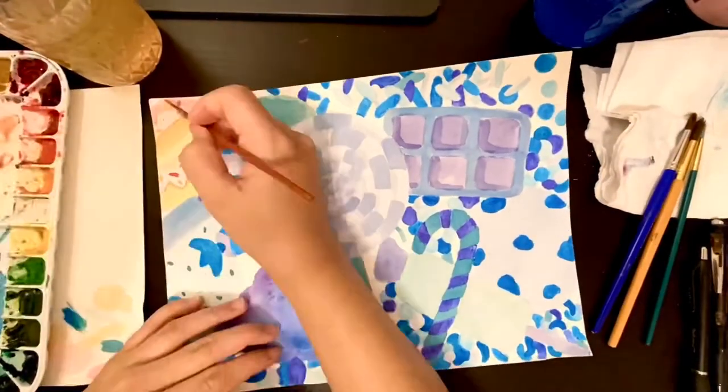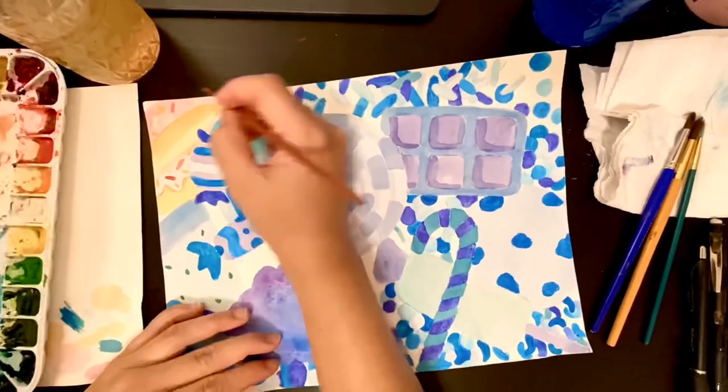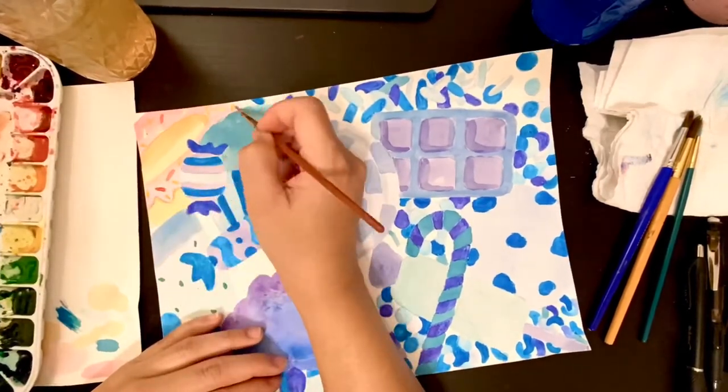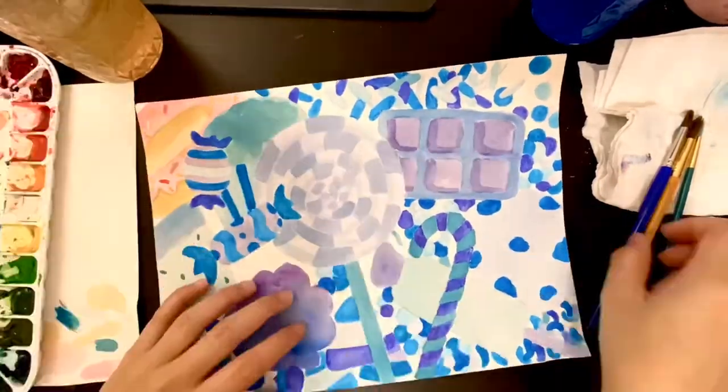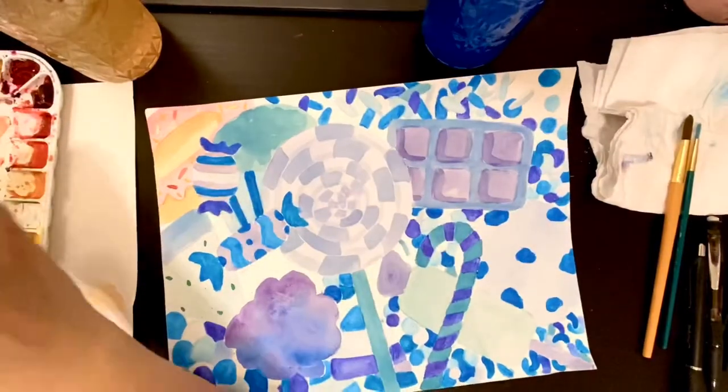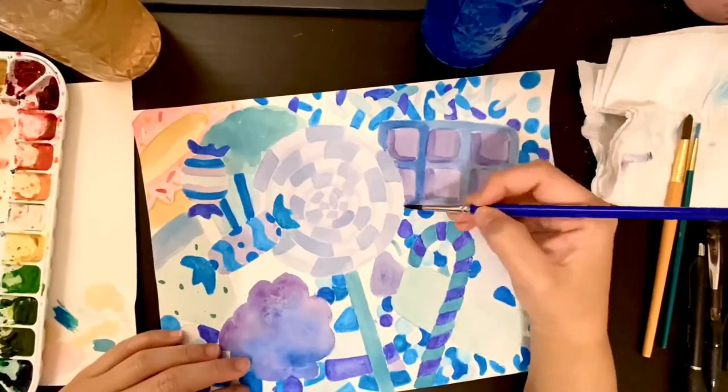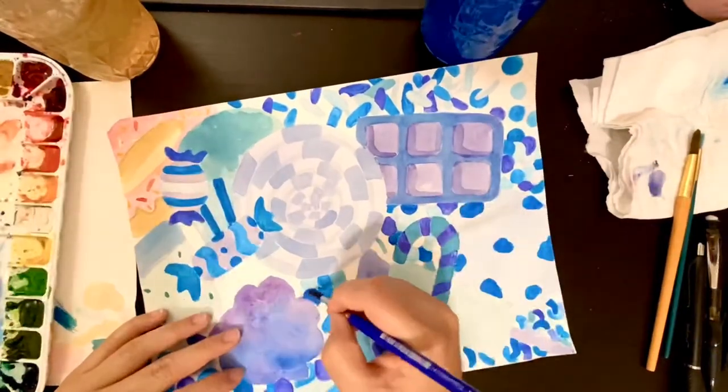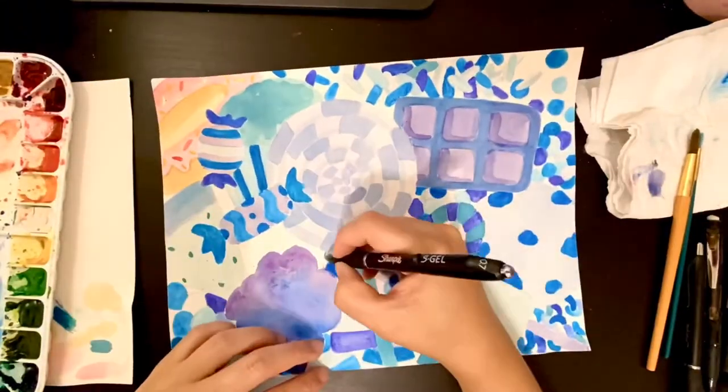A watercolor tip that I recommend is to work all around the page. That means constantly moving and not staying in one area. This allows your first layers to dry in one section so you can constantly be painting and not wait for an area to dry before applying the second layer.